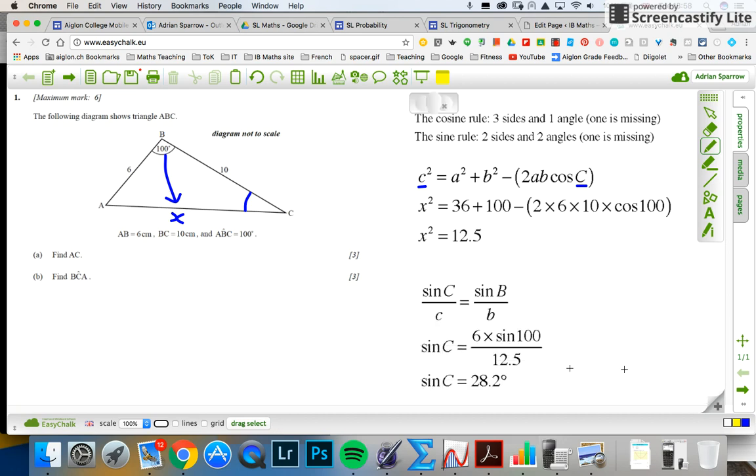Let's get rid of the whole thing. Sin C is opposite six. So that one there becomes six. Sin B, which is 100. And that's opposite 12.5. And then I multiply both sides by this six, and then use my calculator to get the final answer.